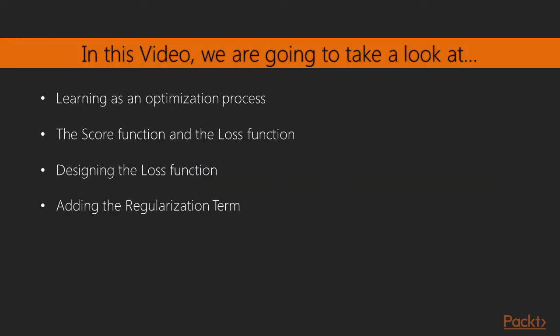In this video, we will firstly motivate why learning in neural networks can be seen as an optimization process. Then we will define more precisely, with respect to what we have done in the previous videos, what the score function and the loss function are.